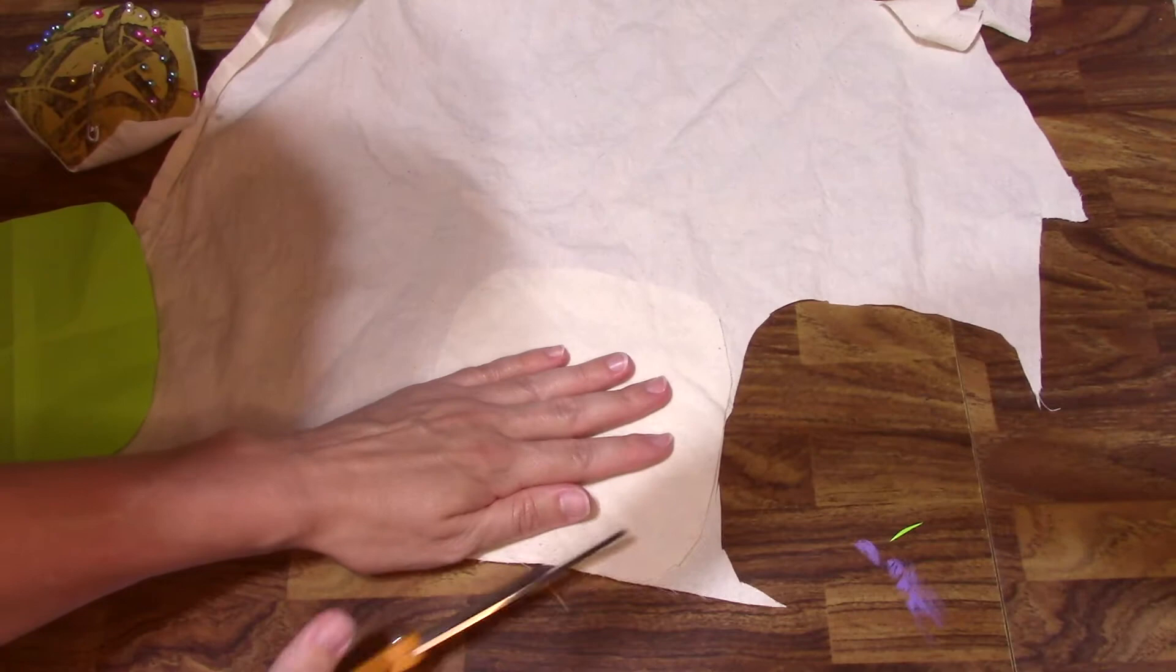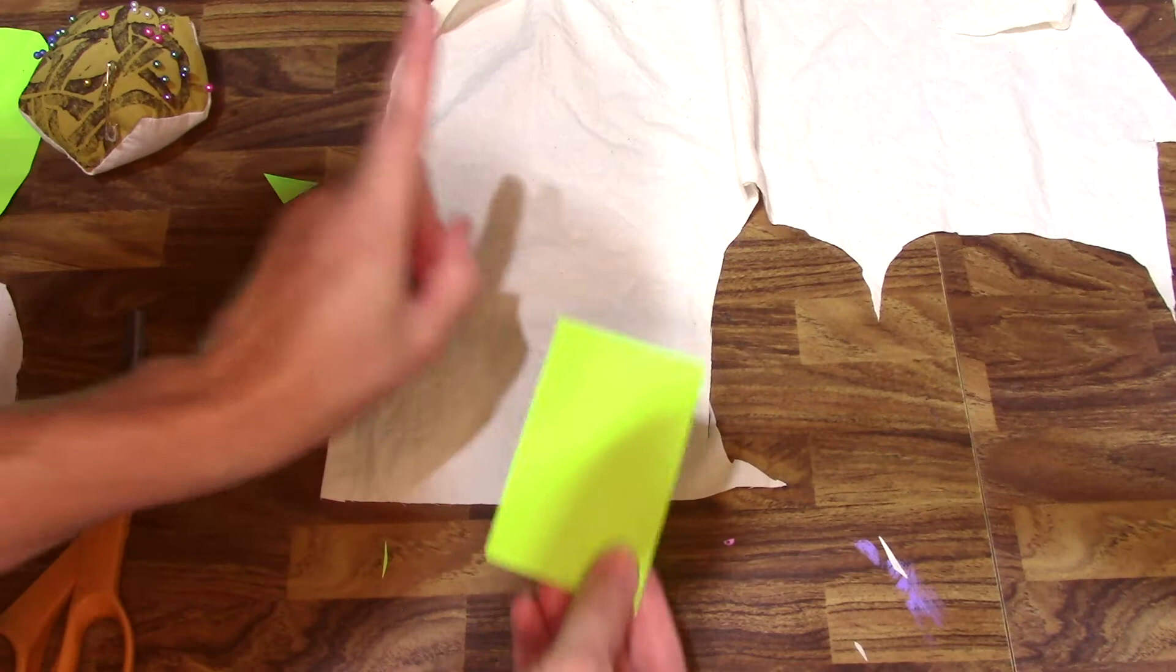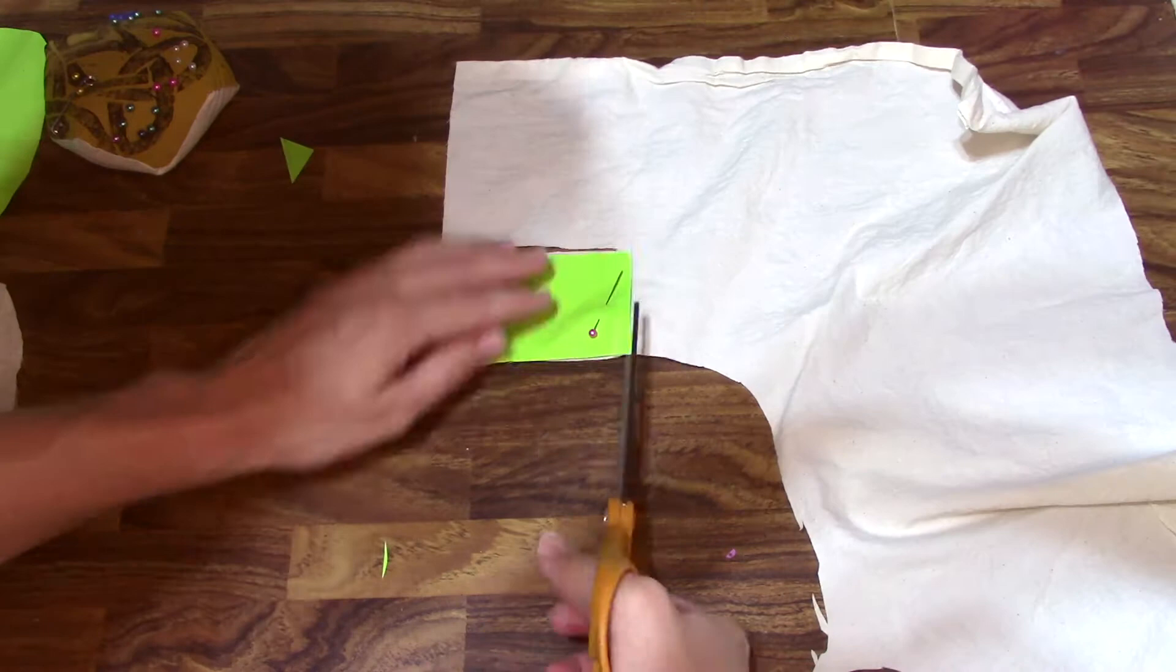Once you have your two bow pieces, you'll need to cut one rectangular piece for the center. You'll only need one of these because it will be folded lengthwise and stitched along one side.